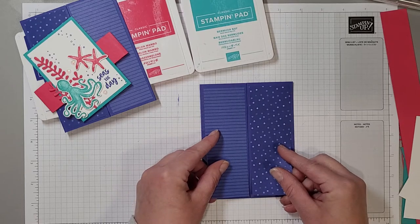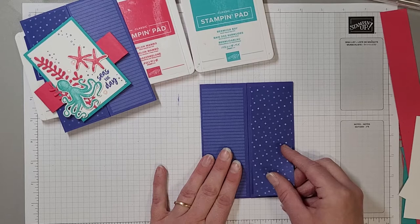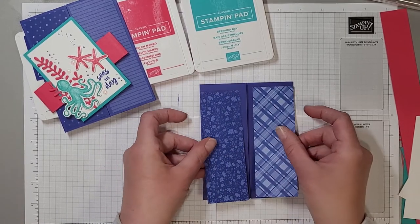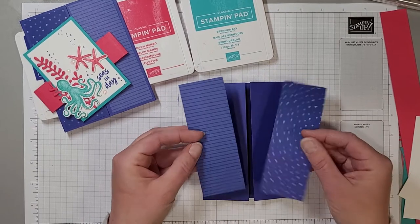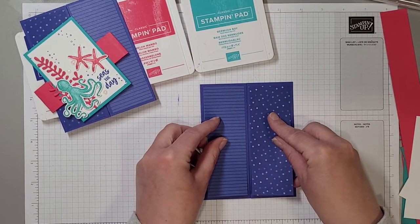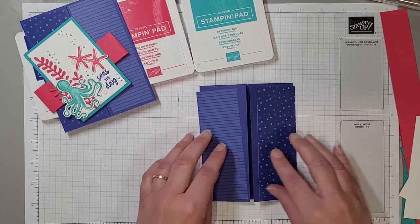So you get eight sheets of each of the brand new in colors. These are the two designs that you get for each and on the back of course they have different designs as well. I love the patterns that have been chosen this year. I think they're going to be amazing on so many different projects.